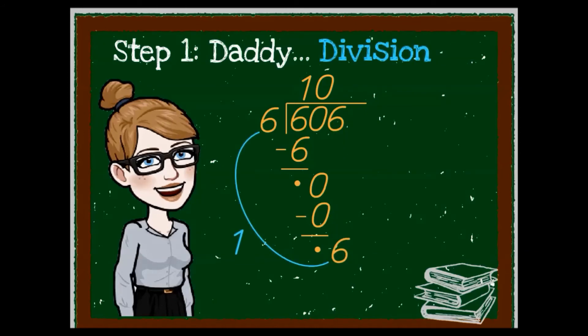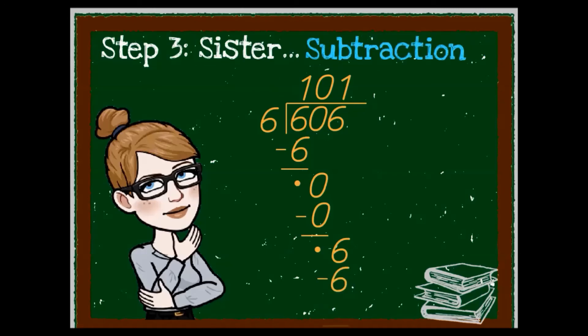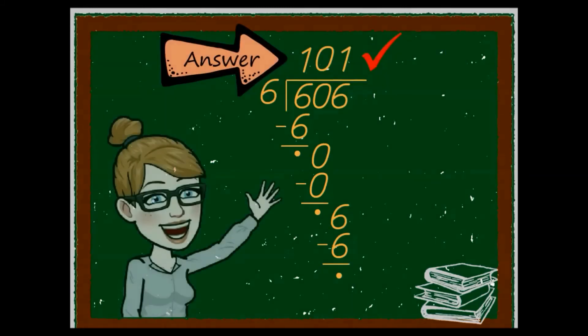Start again with daddy division and move it to the roof. Mommy multiplies from the roof to the door and moves it to the floor. Sister subtracts and we are left with nothing to bring down. Your answer is at the top.